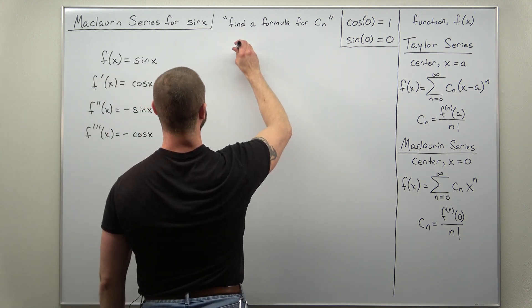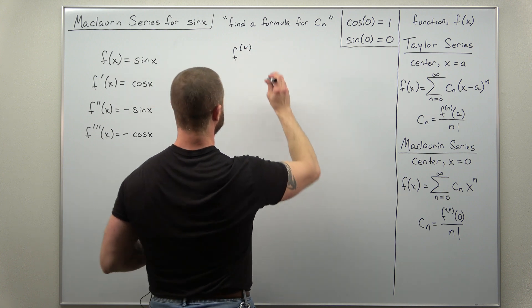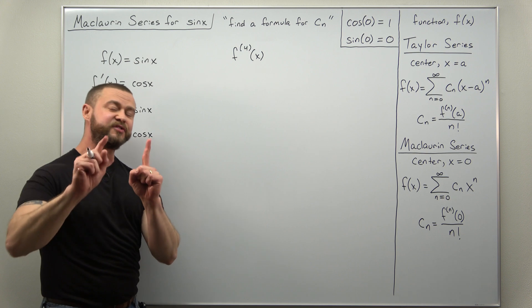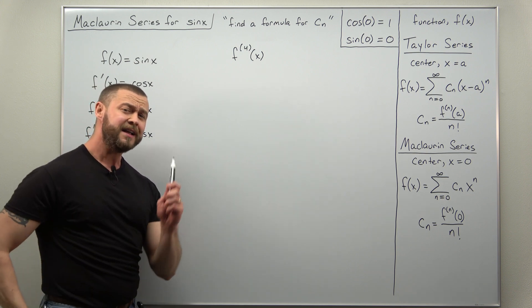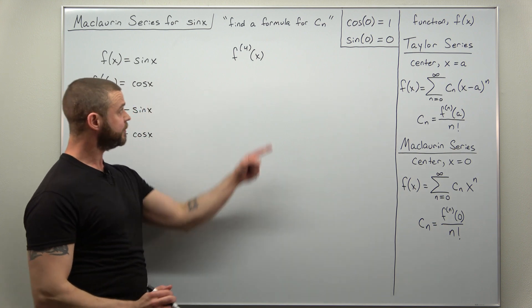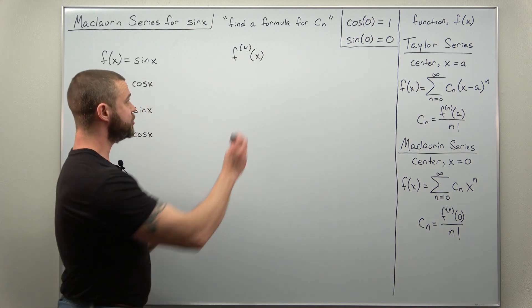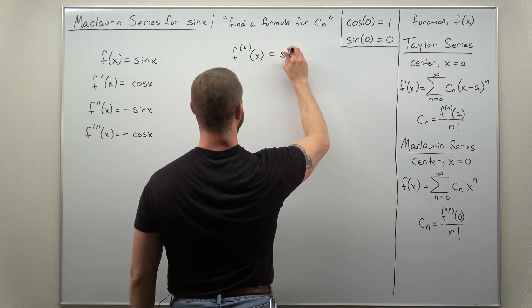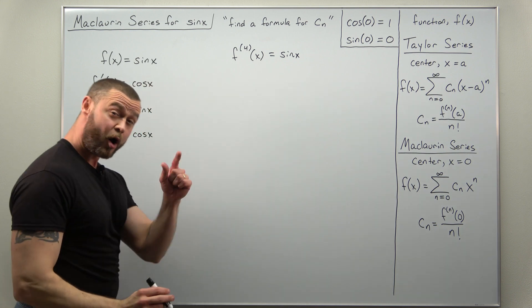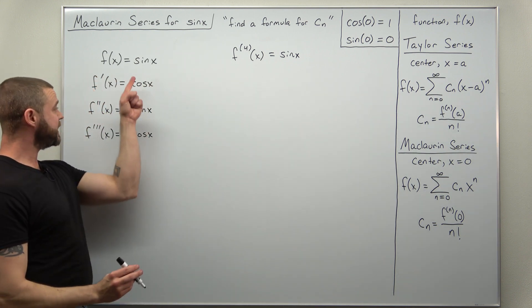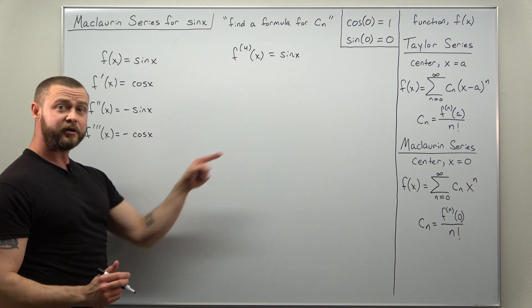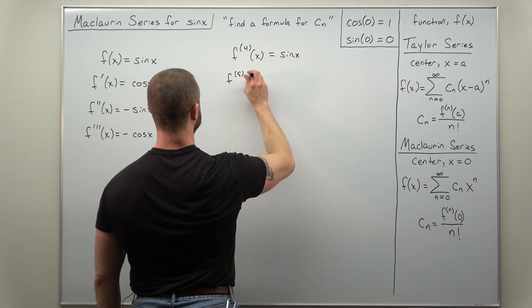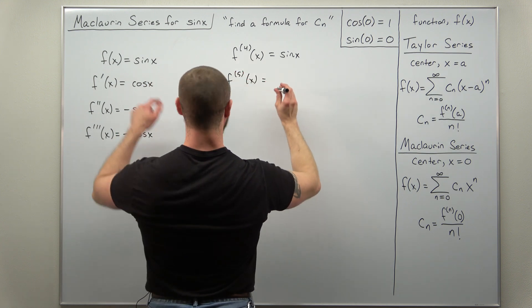Let's write our fourth derivative — and make sure you realize that notation is not an exponent but rather the notation for a higher order derivative. So that's the fourth order derivative of our function, which if you differentiate the third derivative you'll get back to sine of x. They all differentiate pretty much the same as before, and you get the same pattern of derivatives every four terms. So your fifth derivative is going to be cosine of x.